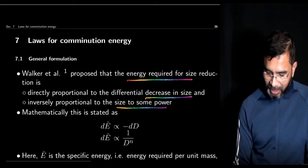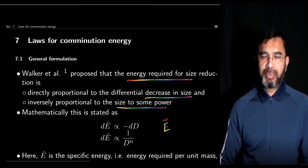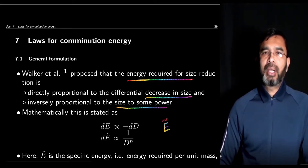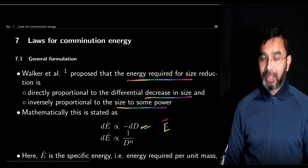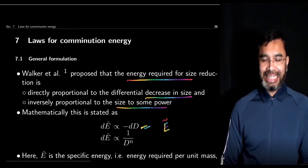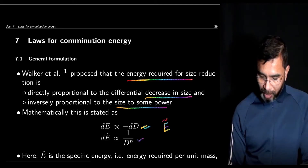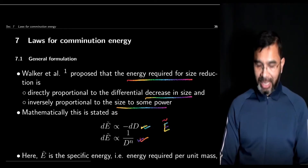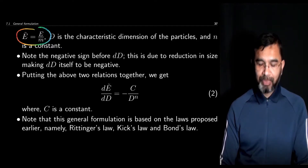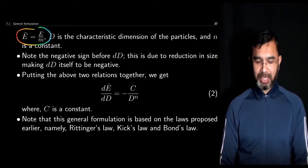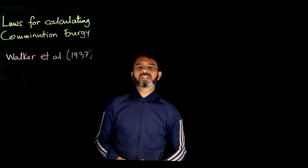Putting these two together, dẼ — where the tilde denotes specific energy, that is energy required per unit mass — is proportional to negative dD. The negative sign appears simply because the size is being reduced, so dD is negative; the diameter at the beginning is larger than the diameter at the end. The second point is dE proportional to 1 over d to some power n, where n is a constant. Walker proposed this as a general formulation covering both Rittinger's law and Kick's law.